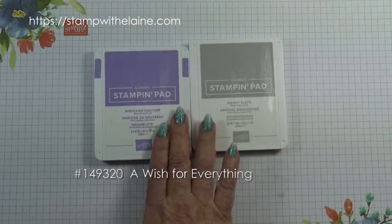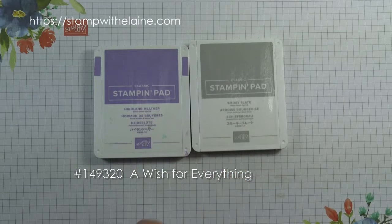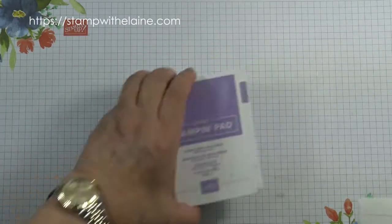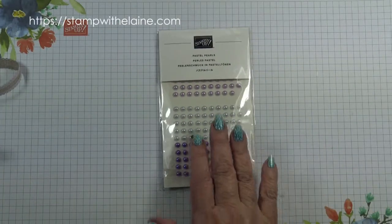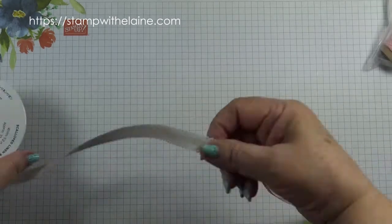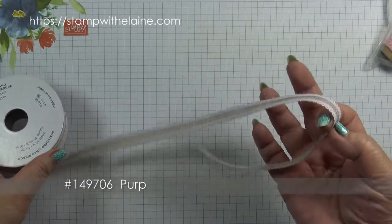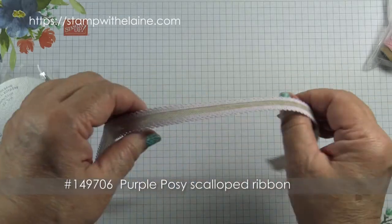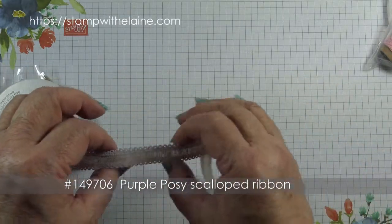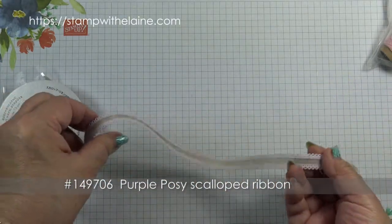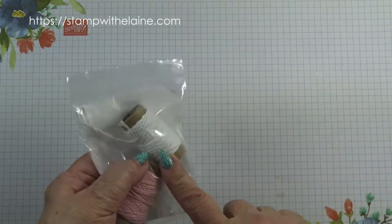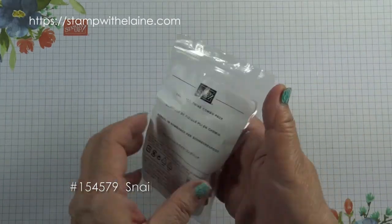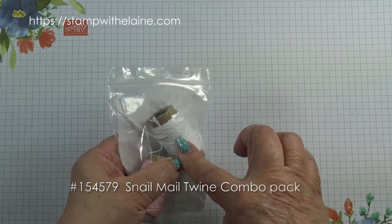The other items I'm using are the Highland Heather and Smoky Slate inks, for embellishing the pastel pearls, the purple posy scalloped ribbon. This is in the last chance product sale at the moment, reduced from £7.50 to £4.50. The snail combo twine pack, I'm using the whisper white.